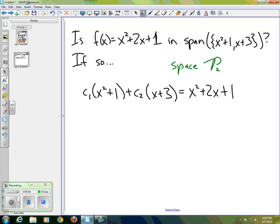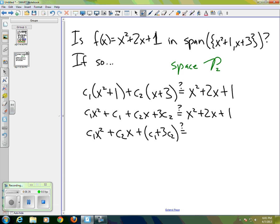We set that equal to x squared plus 2x plus 1. And if we distribute our constants, our scalars, we have c1 x squared plus c1 plus c2 x plus c2, or 3c2. And we want that equal to x squared plus 2x plus 1. We need to group the corresponding terms on the left side.